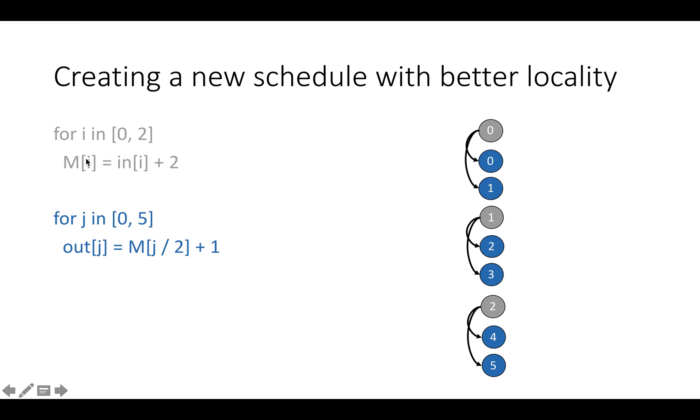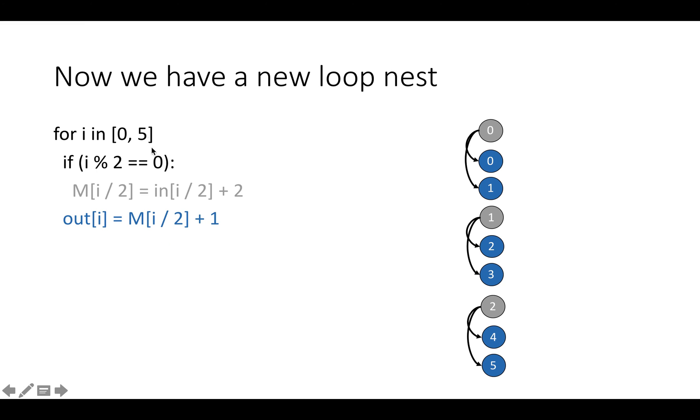And we notice we changed the indexing in this producer statement because we fused it into a loop with larger bounds. So for example, when i is zero, we're going to set M[0] equal to in[0] plus two. And then we're going to write to output zero, and then we're going to circle around and i is going to be equal to one. We're going to skip M because one mod two is one, and then we're going to do out[1] equals M[1/2] plus one, which is actually the set of operations we do in our original loop nest. So this is just a reordering of our data processing operations to put reads from memory closer to the writes that produced the data being read.